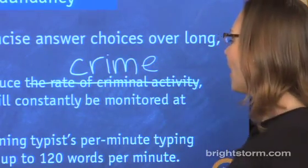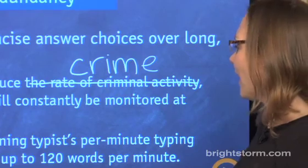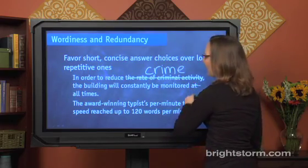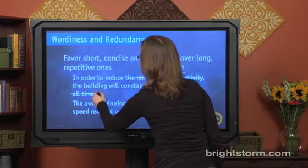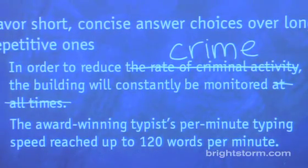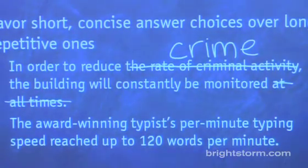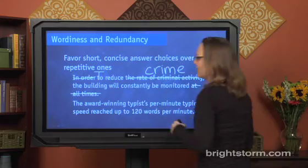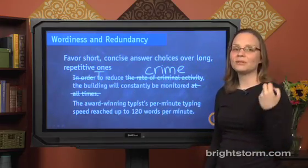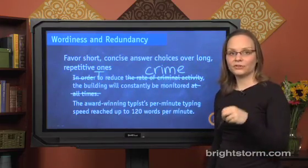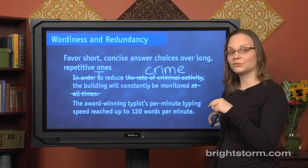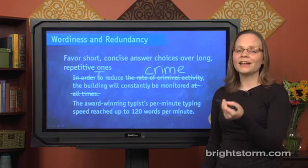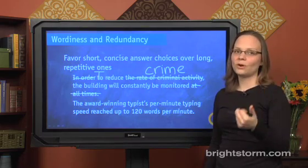"At all times" is repetitious after we already have "constantly." We also don't need "in order to" — we could just say "to reduce." On the SAT, you won't be making these edits yourself, but you will be looking for answer choices that match a cleaner version of the sentence more closely — answer choices that are short and to the point.